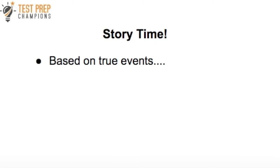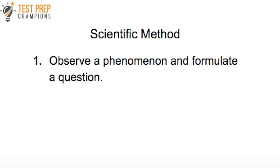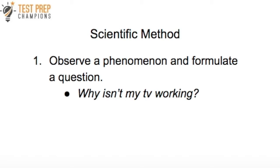Remembering the steps of the scientific method is about as easy as remembering that story. So let's look at step one. The first step of the scientific method is to observe a phenomenon and to formulate a question. Remember how I looked at the TV and I observed that it wasn't working, and so I formulated the question: why isn't my TV working? So again, step one is to observe a phenomenon and formulate a question.